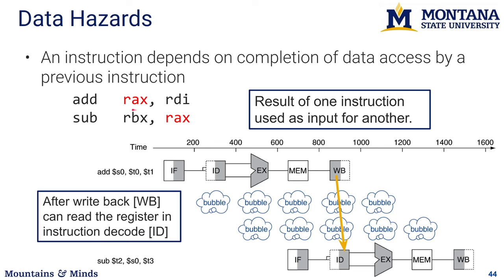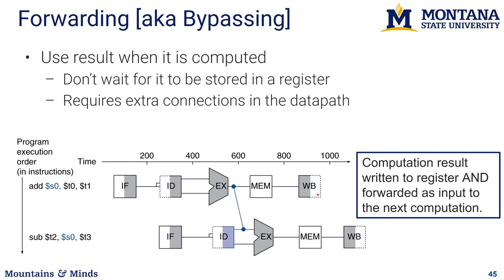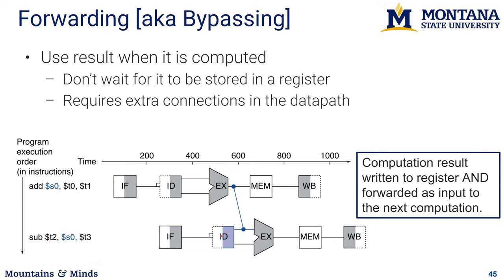One way to avoid data hazard stalls is to insert other independent instructions in the gap. Another technique is forwarding, also known as bypassing — having a set of wires that forward data from the output of the execute stage to the input of the next instruction's execute stage. When two instructions are staggered, instead of pulling data from the register bank for the second instruction, instruction decode detects the dependency and pulls the value from the bypass wire, so no cycles are lost.